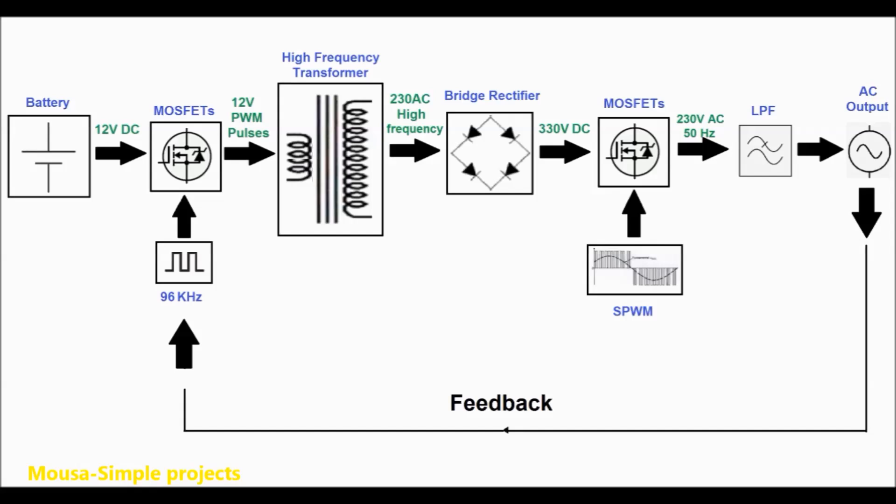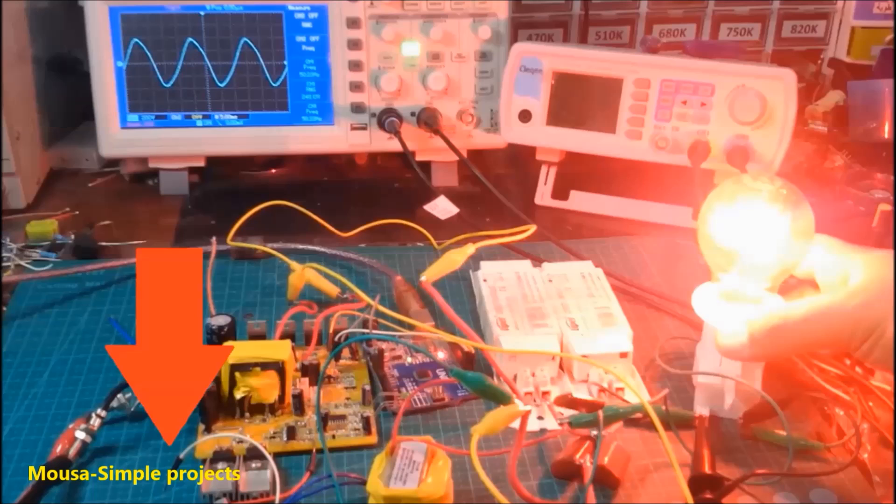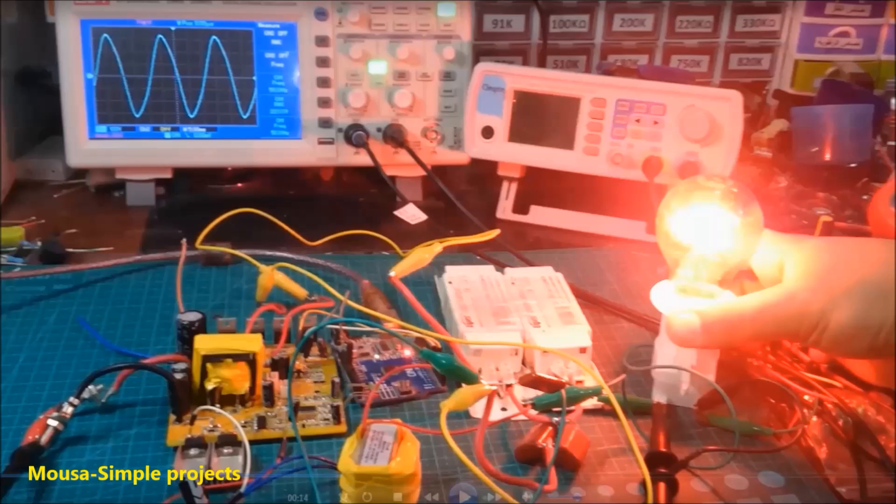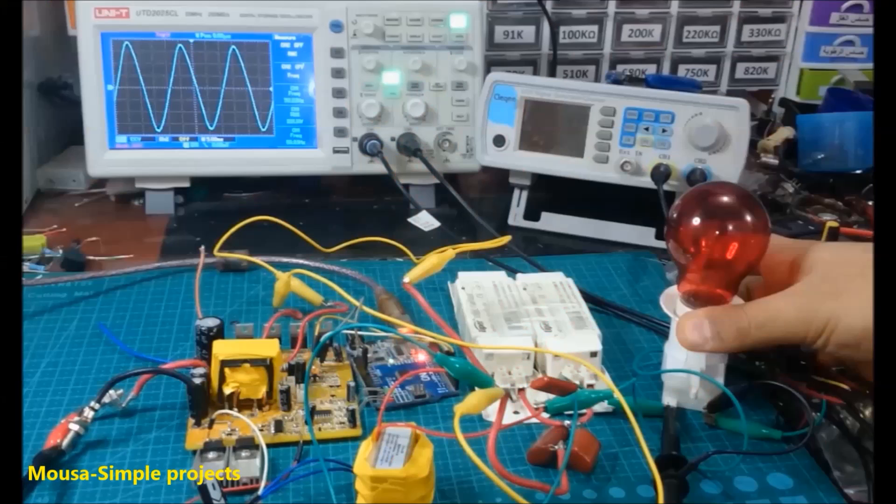Whether the voltage stable, whether the load is on or off. See what happens if I remove the feedback loop. The output voltage changes depend on the load. So the feedback loop is necessary to make the output voltage stable whether the load is on or off.